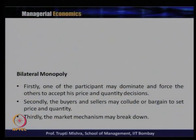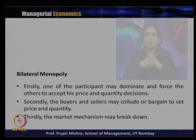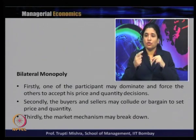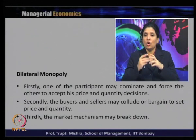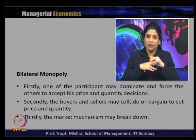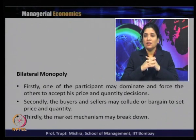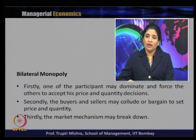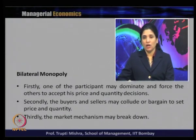Firstly, it may happen that one of the participants — either the monopolist or the monopsonist — may dominate and force the other to accept their price and quantity decision. So either the monopolist will force the monopsonist to accept their decision, or the monopsonist will force the monopolist to accept theirs. Secondly, the buyers and sellers may collude or bargain to set the price and quantity, and depending upon their bargaining strength, they bargain to set the price and quantity according to their own choice.